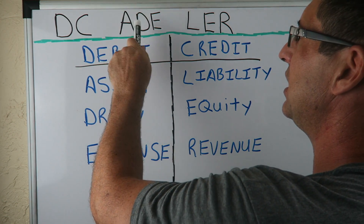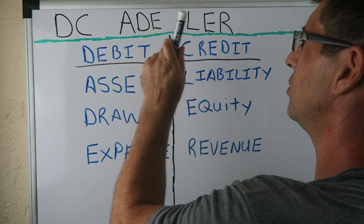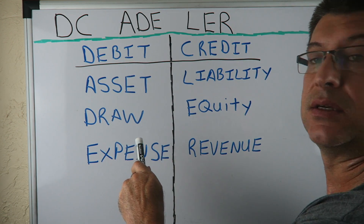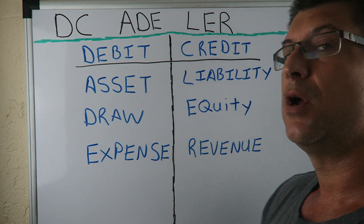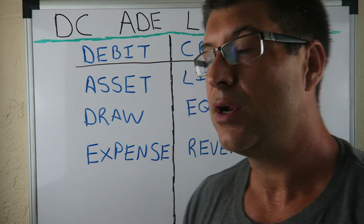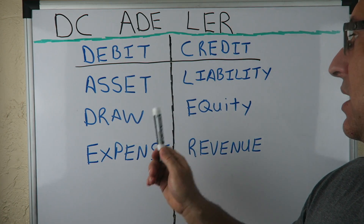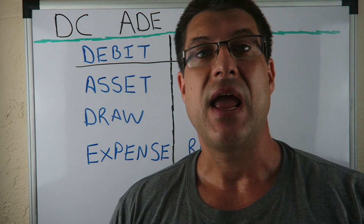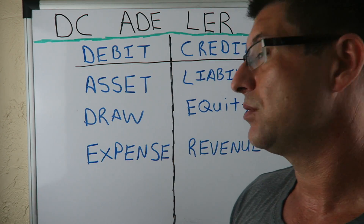D-C-A-D-L-E-R. It's debit, credit, asset, draw, expense, liability, equity, revenue. I want you to write D-C-A-D-L-E-R — debit, credit, asset, draw, expense, liability, equity, revenue — down on your paper every day, or whatever you're going to use for this.